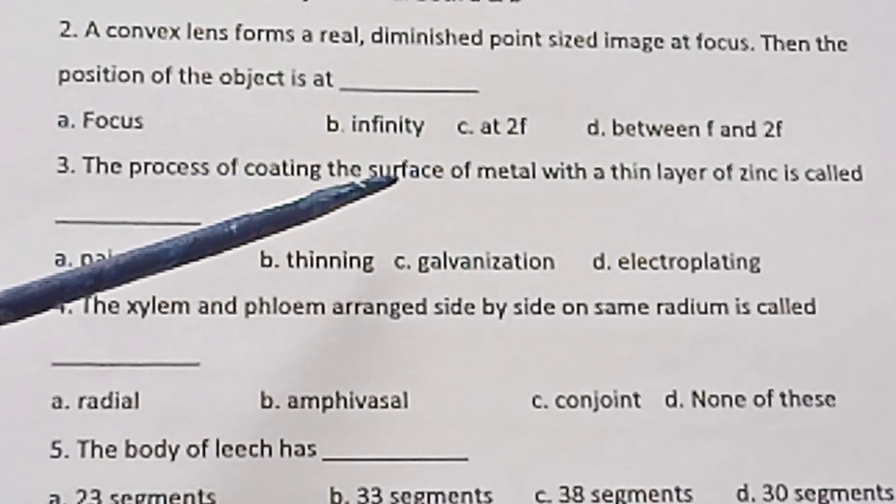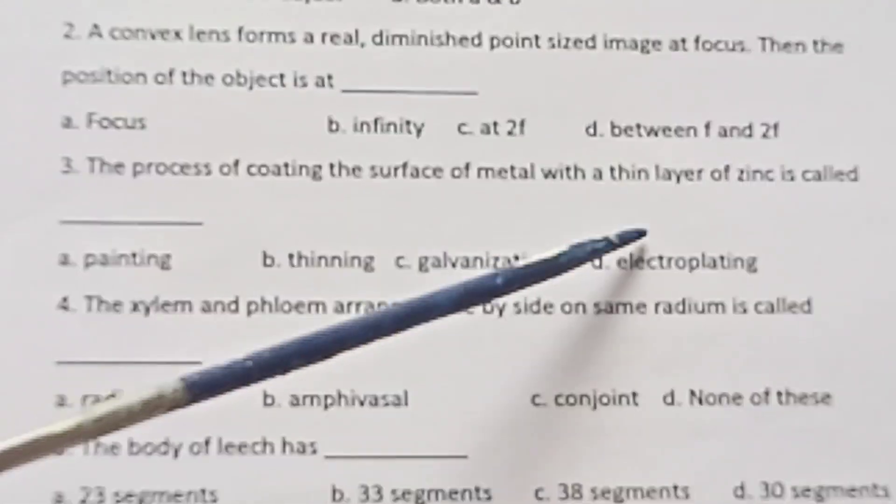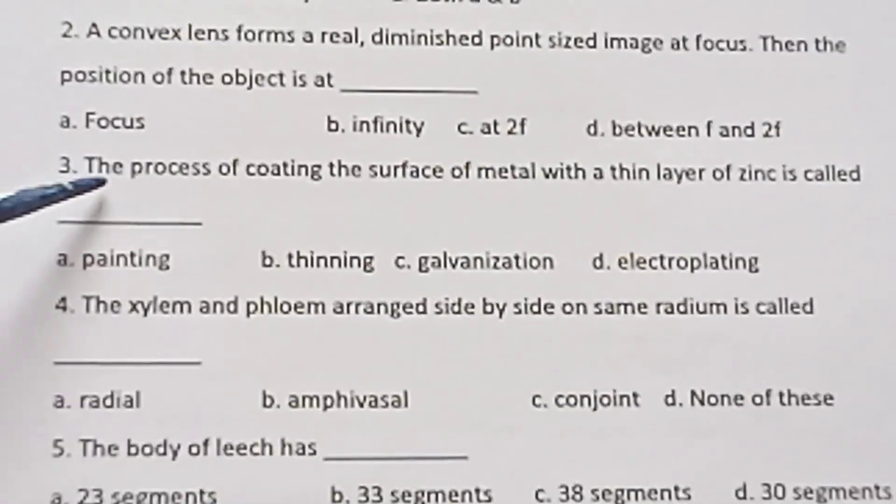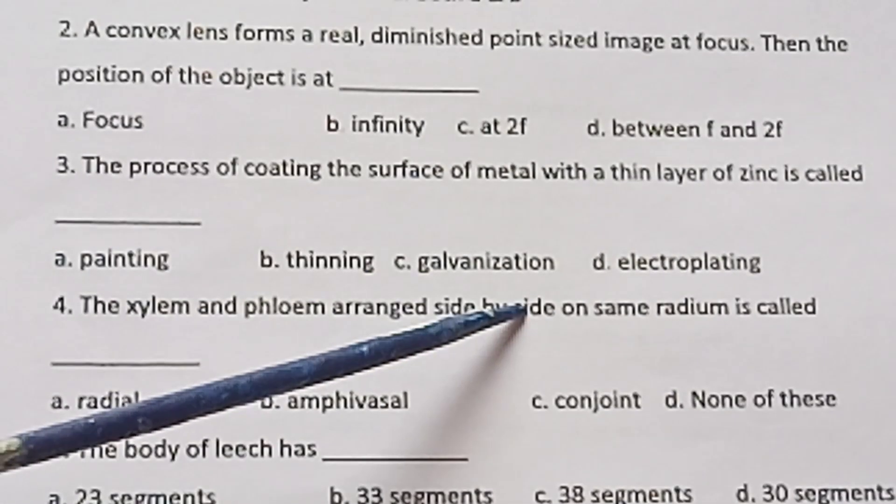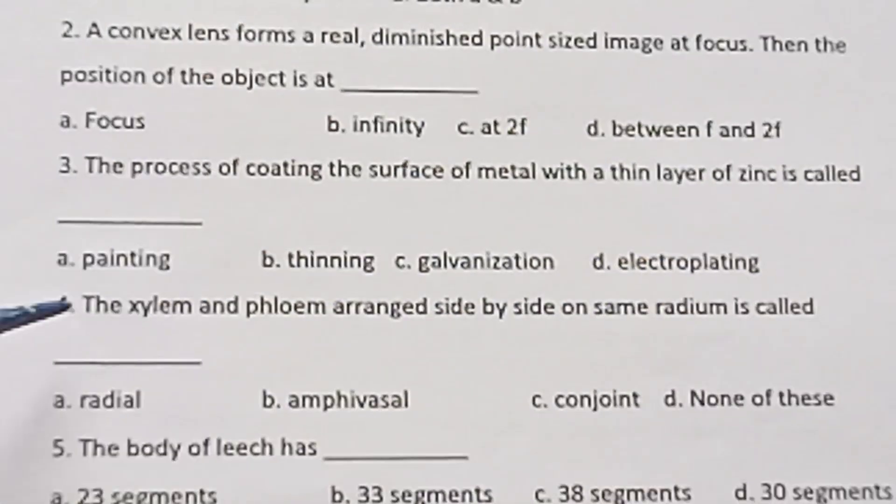Third question. The process of coating the surface of metal with a thin layer of zinc is called dash. A. Painting. B. Thinning. C. Galvanization. D. Electroplating.